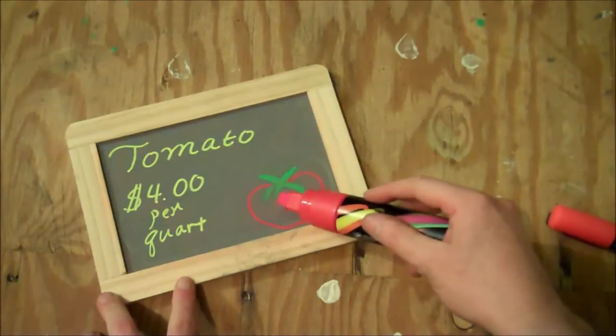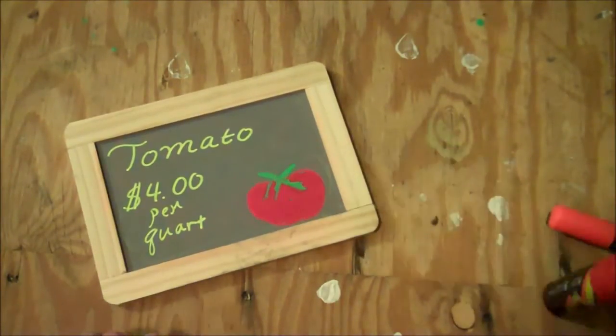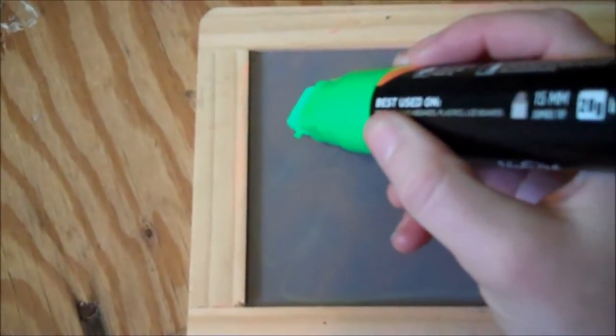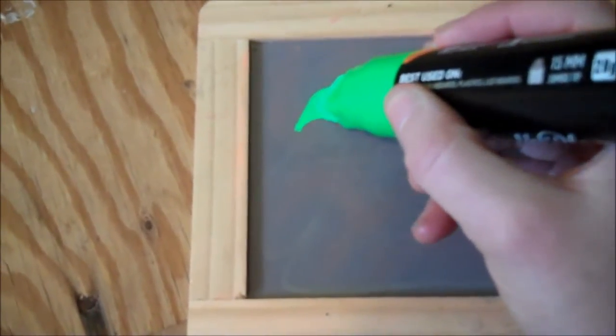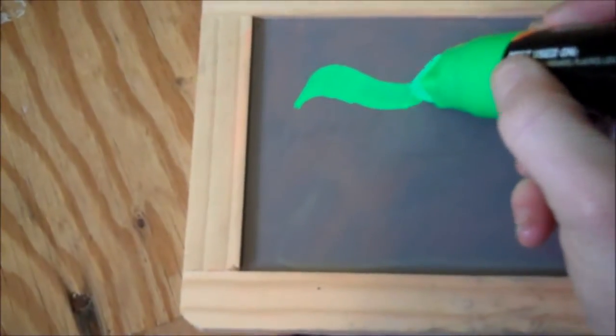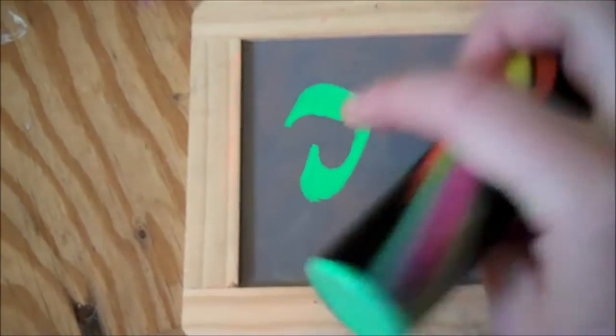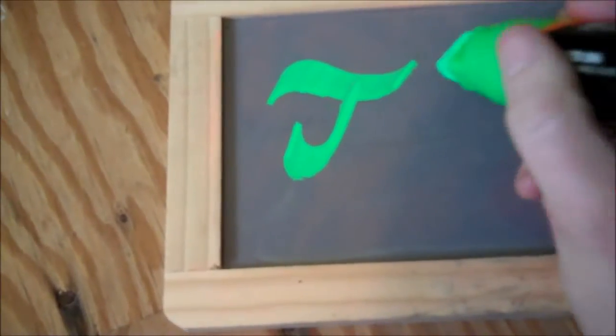You can make cute little signs for a farm market or bistro. To calligraphy with the markers, you hold the marker at a 45 degree angle and then you keep it at that angle as you draw out your words. You don't turn it at all, and that will give you that calligraphy with the different thicknesses.